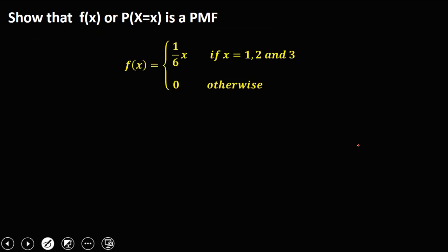Then we also have this given — show that this given is a PMF. Using the property of discrete distribution that the sum of all probabilities is equal to 1, we first need to find the probability for every value of x. Starting with x equals 1, so f(1): substitute into the equation, 1 over 6 times 1, which equals 1 over 6.